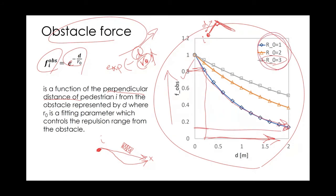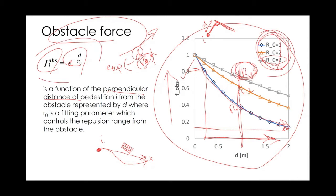Choosing different R0 values affects the force. Blue is R0 = 1, orange is R0 = 2, and gray is R0 = 3. Larger R0 imposes a larger force for the same distance, meaning the pedestrian is more sensitive to the wall and prefers to stay farther away. R0 comes from calibration using data on how people actually avoid walls and obstacles.